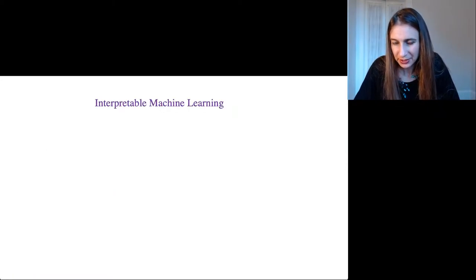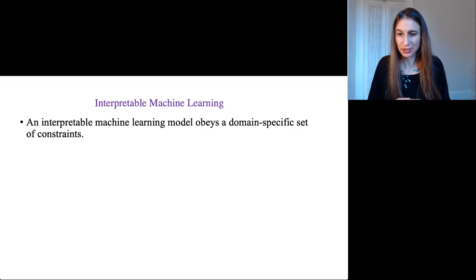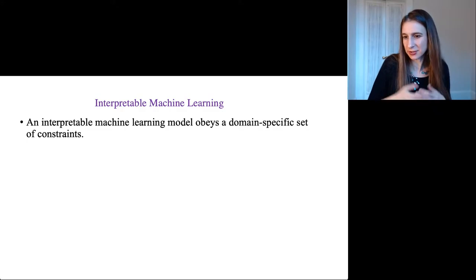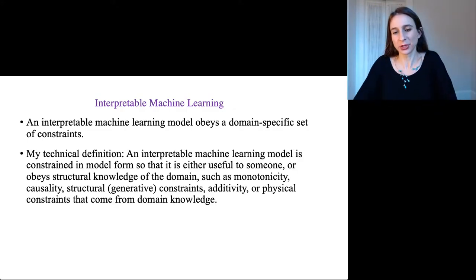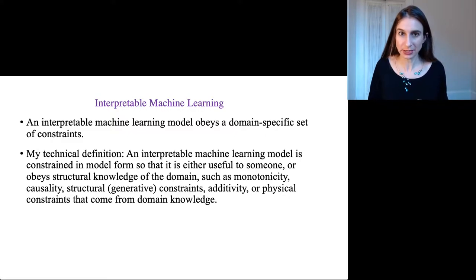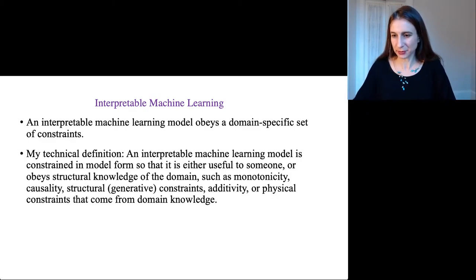Some definitions: An interpretable machine learning model is constrained. It obeys a domain-specific set of constraints so that someone can understand what it's doing. More technically, it's a model that's constrained in model form so that it's either useful to someone or obeys some structural knowledge of the domain, such as monotonicity, causality, generative constraints, additivity, or other physical constraints from domain knowledge.